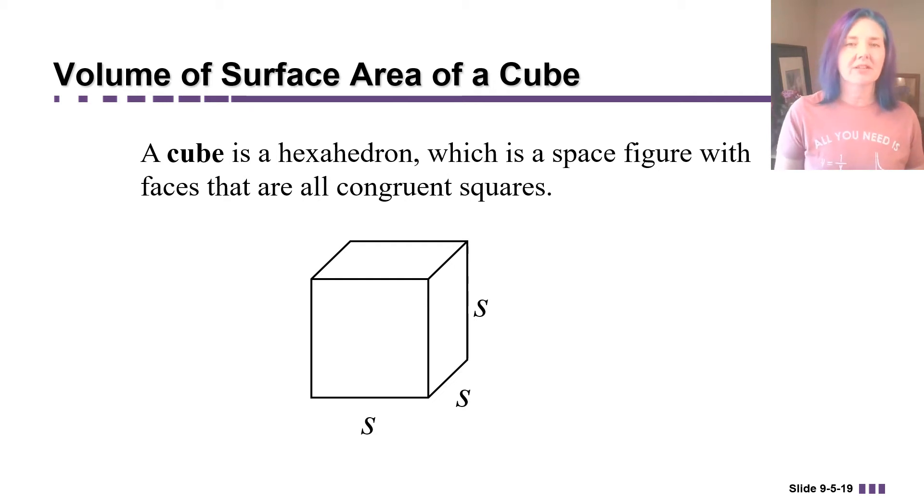Hi, I'm Ms. Hearn. Let's get started. In this video, we're going to talk about the volume and surface area of a cube. The technical name for a cube is a hexahedron. It's a space figure where all the faces are congruent squares. It's really a special case of a box or a rectangular prism, which we talked about in the other videos.